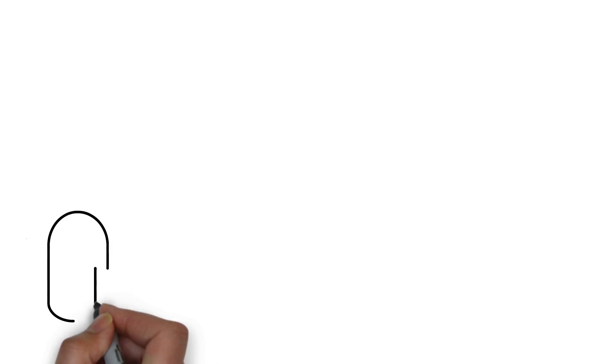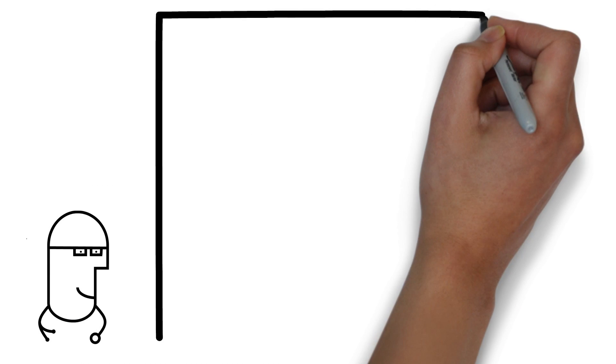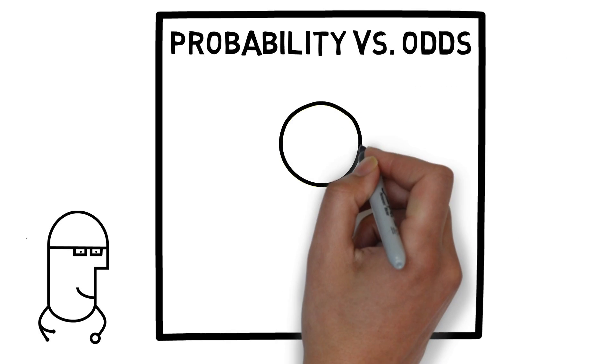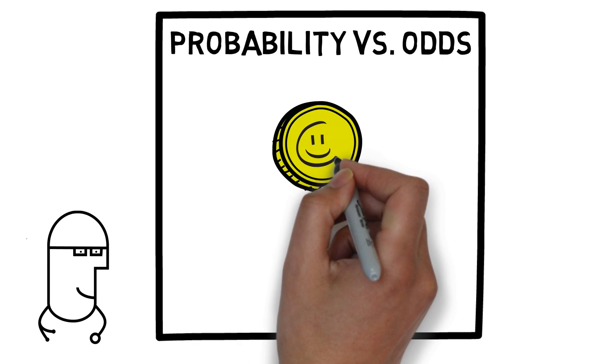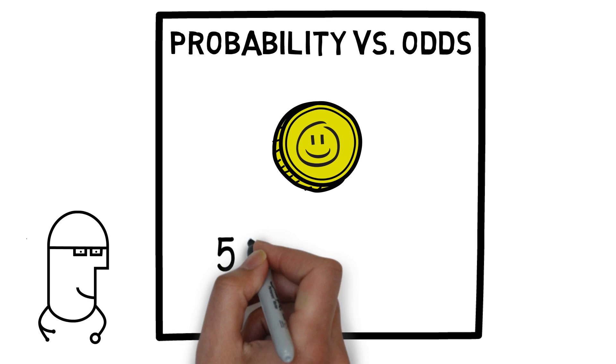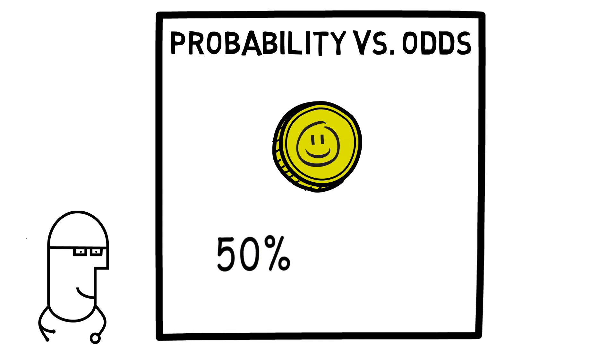First, let's try and understand what odds ratios are. To do that, we need to first understand the difference between probability and odds. Let's talk first about flipping a coin. If we think about the probability of getting heads when we flip a coin, we'd all agree that the probability is 50%. Probability is calculated by taking the event rate, in this case 1 for heads, and divided by the total events, which is 2, heads and tails.